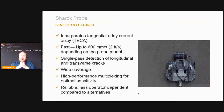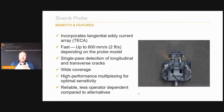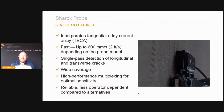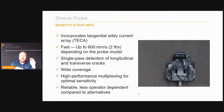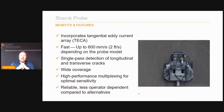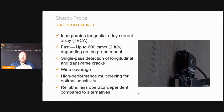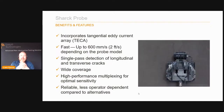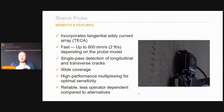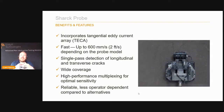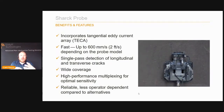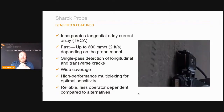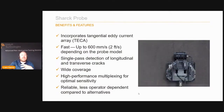One of the first probes we've used is the shark probe — a tangential eddy current array probe — designed for single-pass crack detection, whether longitudinal or transverse cracks. It has relatively wide coverage and we can travel very fast with it, up to around 7 meters per minute for an inspection scenario. An actuator mounted to the front carries out visual inspection simultaneously with the crack detection. We can lift the probe off the surface when driving around to increase the life of the wear parts, and drop it when we want to measure at a specific location.